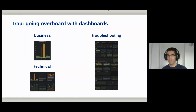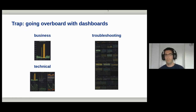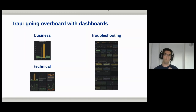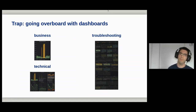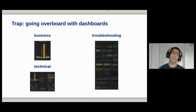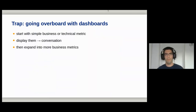My advice is to split your dashboards into three categories. First: business metrics — the most important dashboard, with a couple of business metrics that fit on one screen; if you need to scroll, it's too much. Second: technical dashboards with the most important technical metrics. Third: a troubleshooting dashboard for everything else — a place you visit only when troubleshooting, not on the big screen every day. You can start very simply with just two or three metrics on a dashboard.